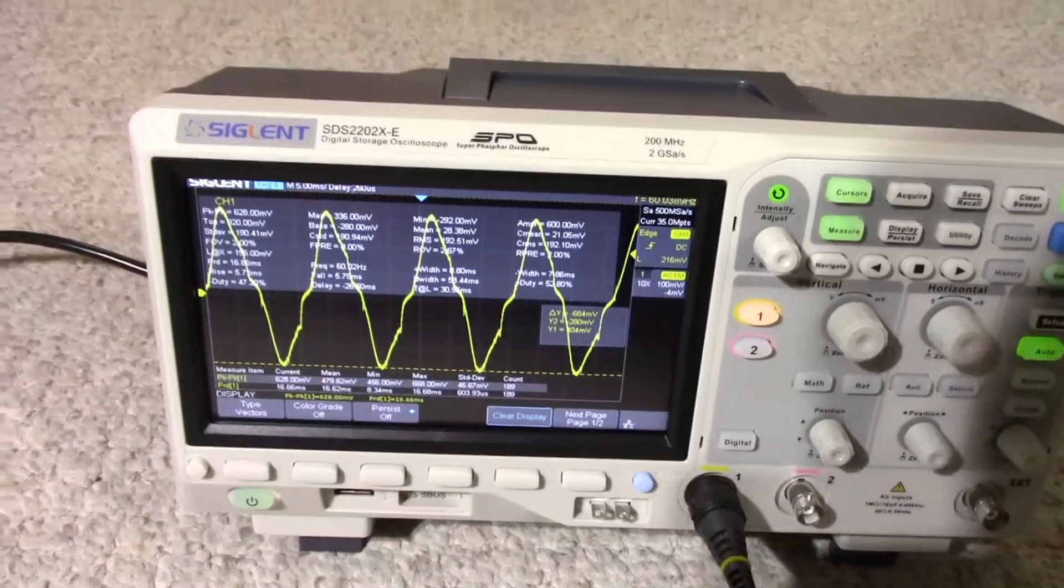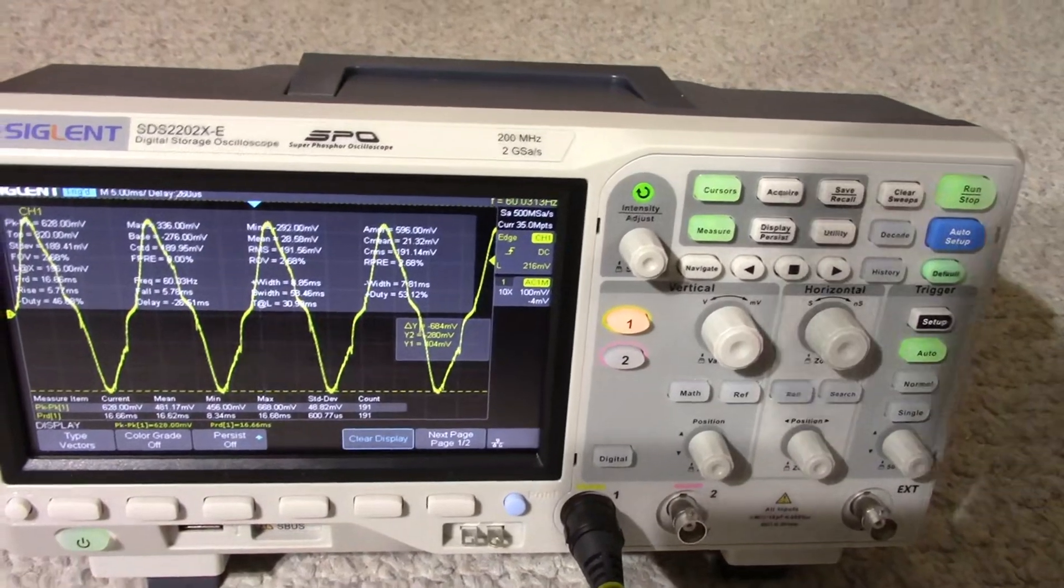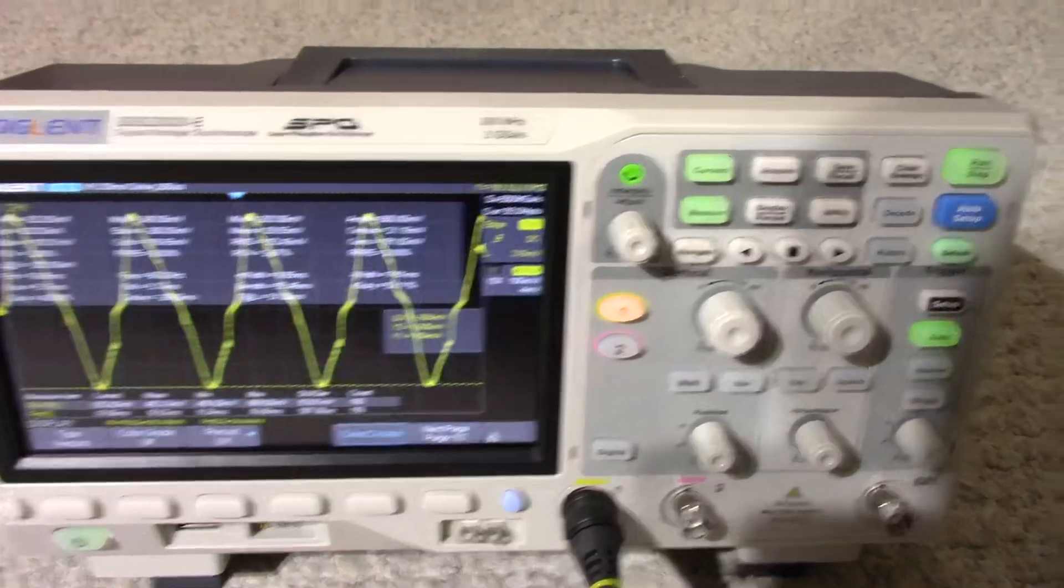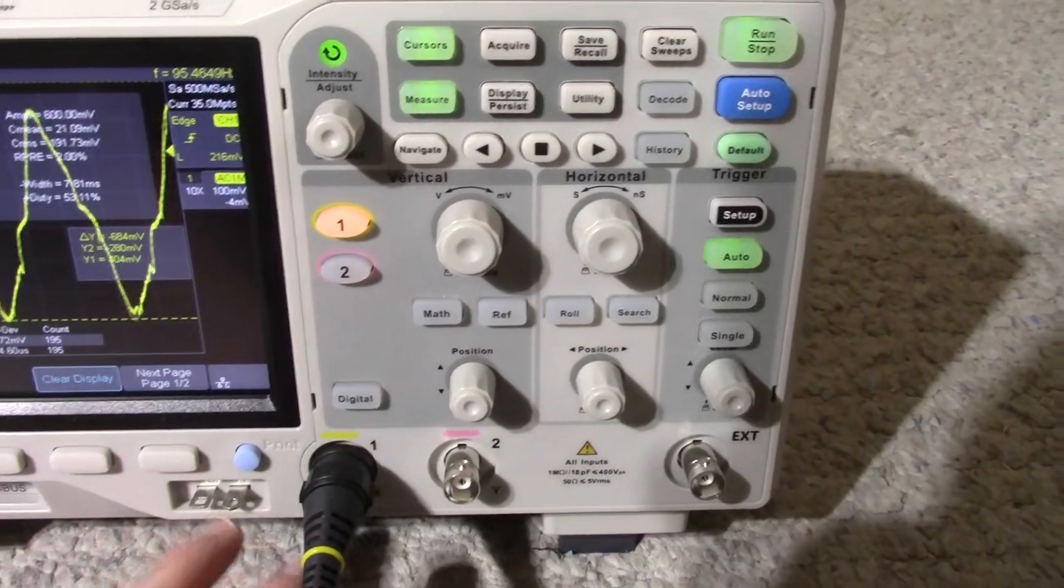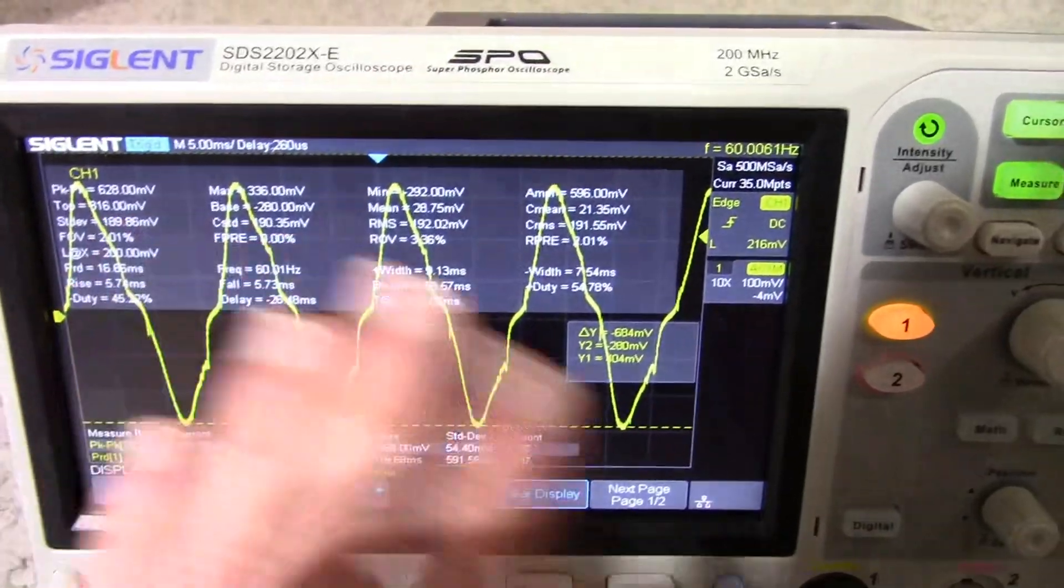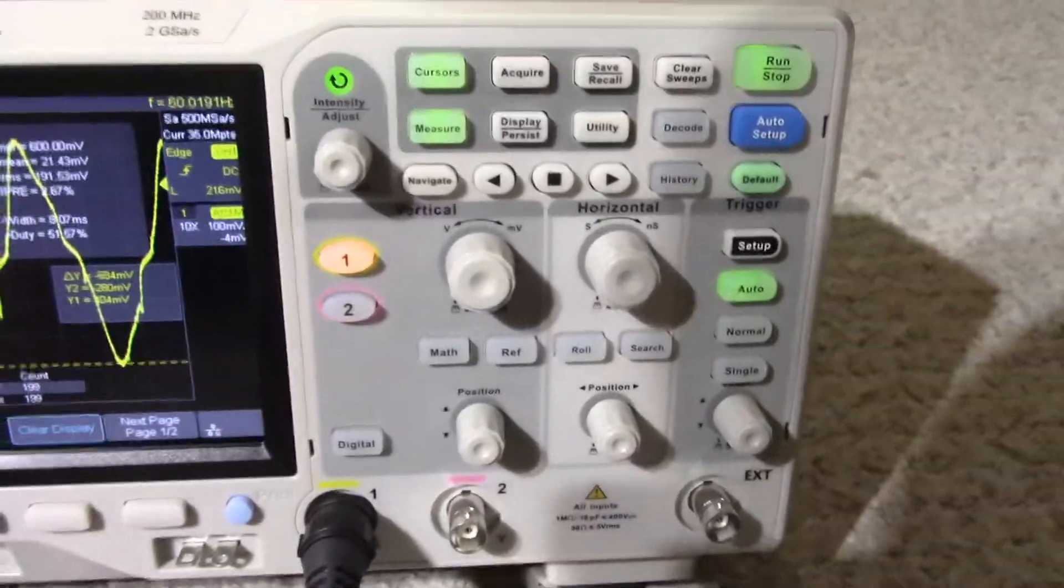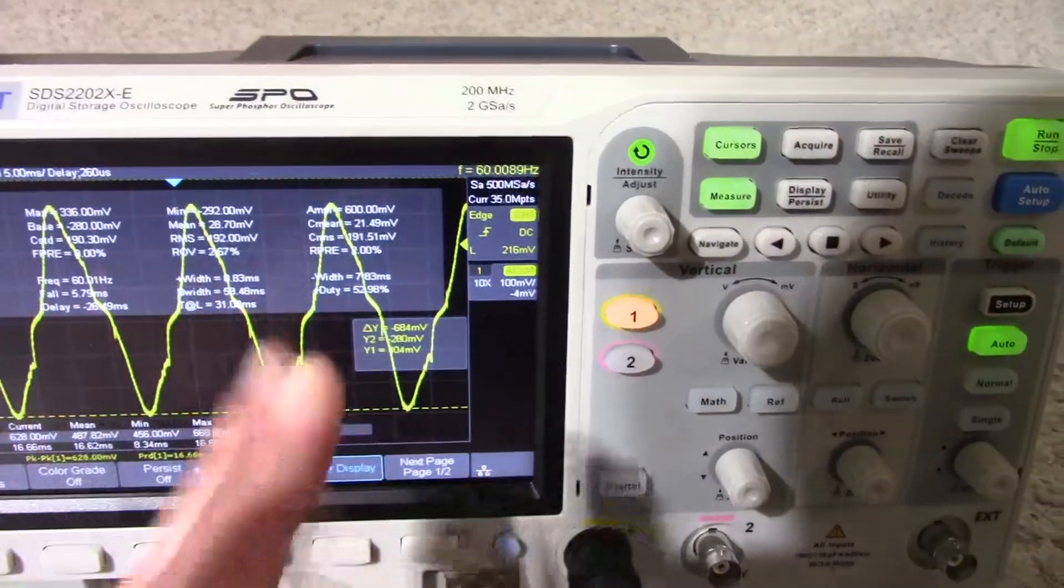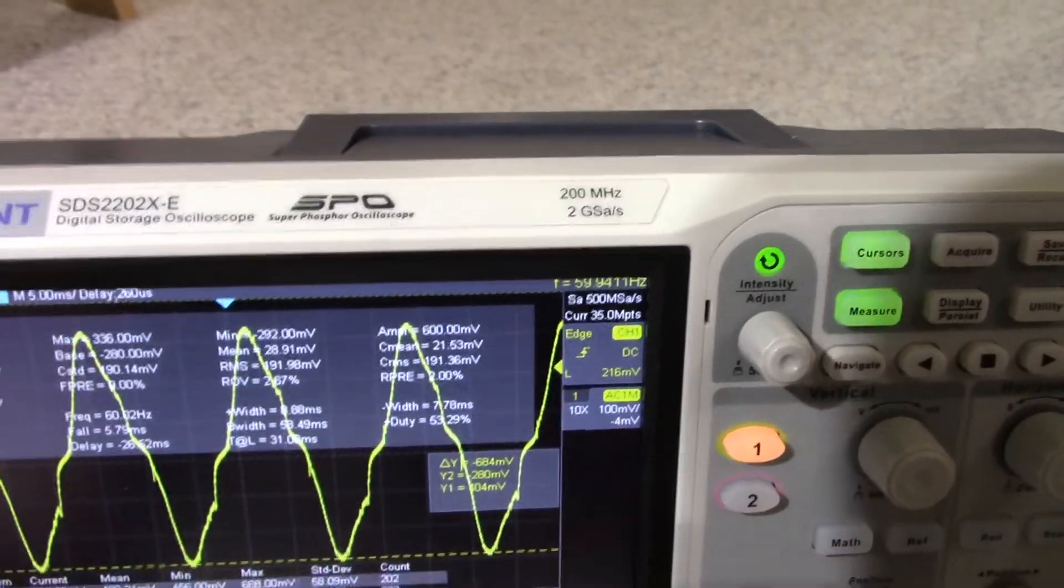My other scope of course is the Rigol, a 1052 or something like that. It's a very old model. It's been out for like 13 years. I'm not sure if they still produce it or not, but it's a nice introductory scope. But this is newer with the higher resolution screen. The screen's bigger. Two channel. I think it's their baseline scope, except that it's a higher model of their baseline series I guess you could say.